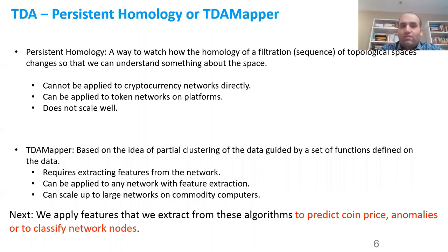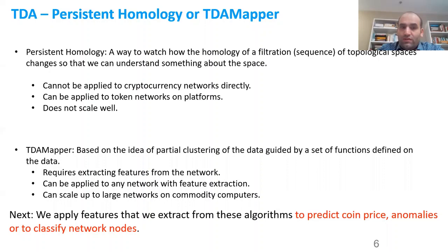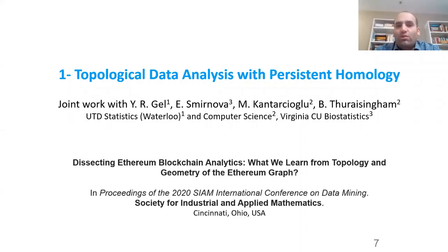Once we have these methods and our blockchain network, we extract features and use them in machine learning algorithms to predict coin price, predict anomalies, and classify network nodes. In this talk, I am going to discuss three works. The first one is called 'Dissecting Ethereum Blockchain Analytics: What We Learned from Topology and Geometry of the Ethereum Graph.'